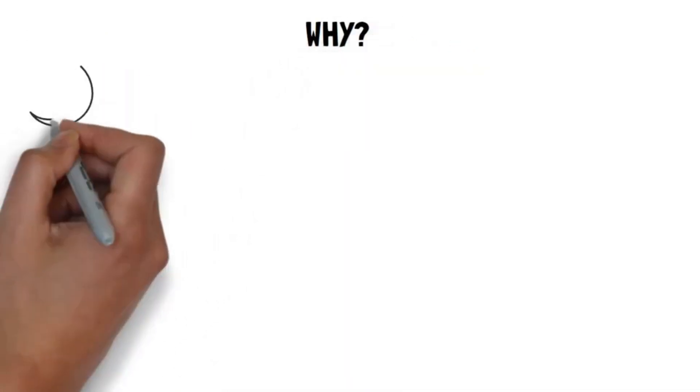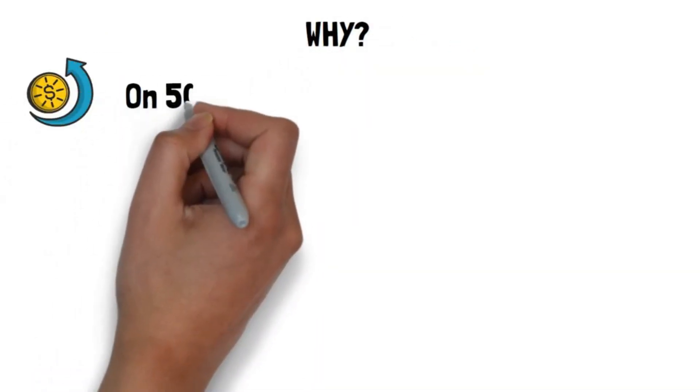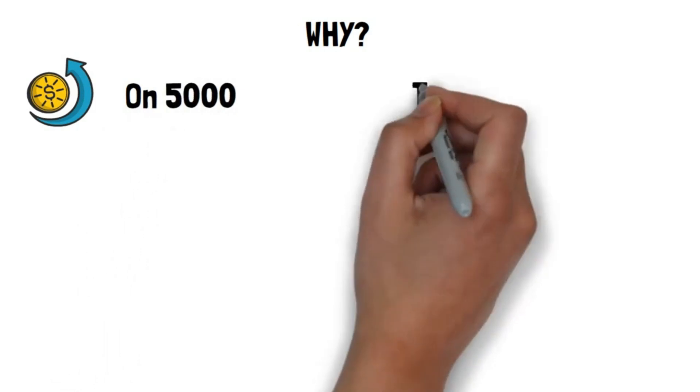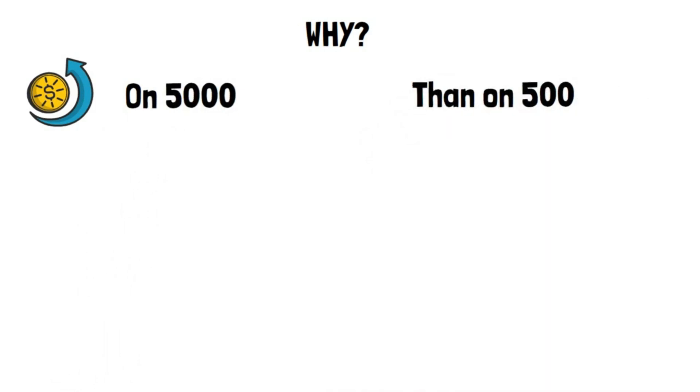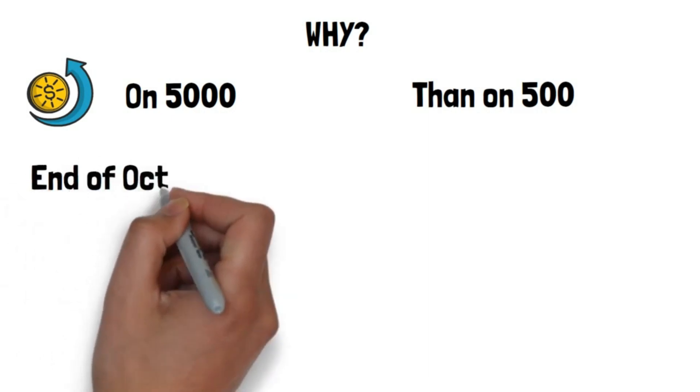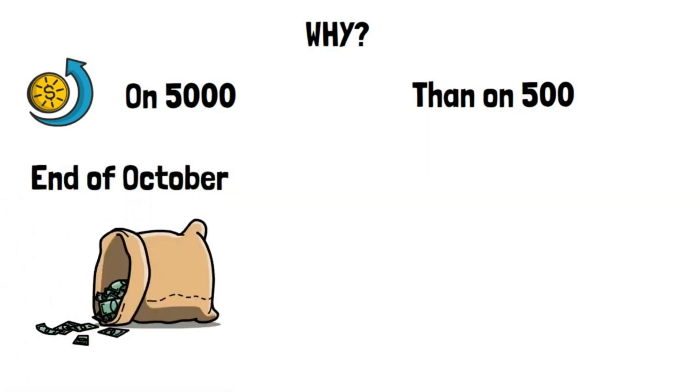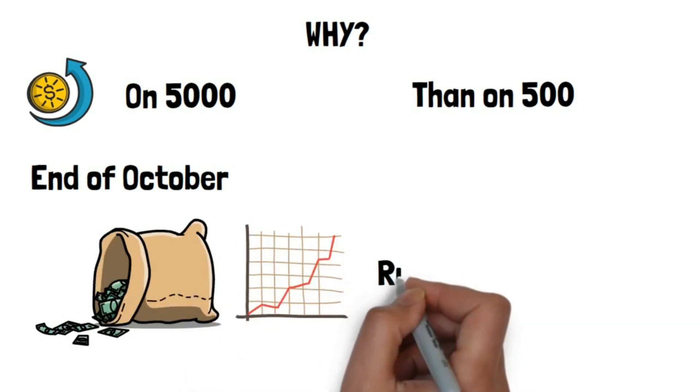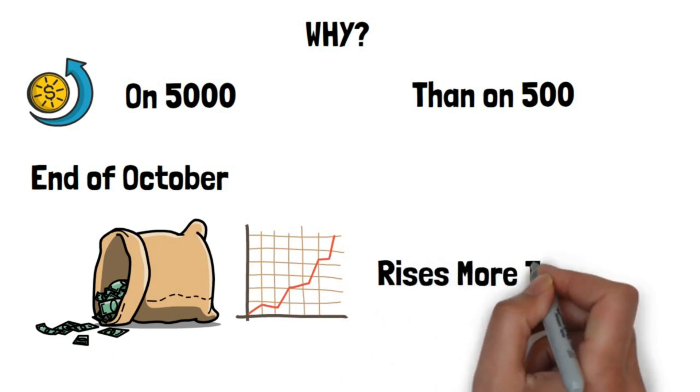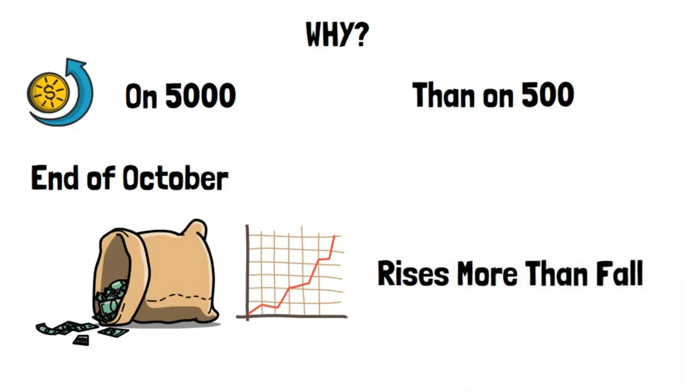Why? The former earns compound interest on AED 5000 right away, but the latter only earns compound interest on AED 500. By the end of October, the former would have potentially accumulated higher returns due to compound interest if there was a bull market. This scenario is more plausible than the alternative since the market rises more than it falls, see below.